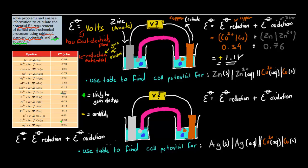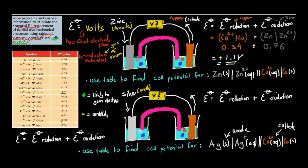Now here we've got another example: use the table to find the cell potential for elemental silver going into its ion at the anode, and copper at the cathode. The first part of our equation is always the anode — the one that's meant to give electrons — and the cathode is the one that takes electrons. So here we've got silver at our anode, and copper again at our cathode, like we did last time.